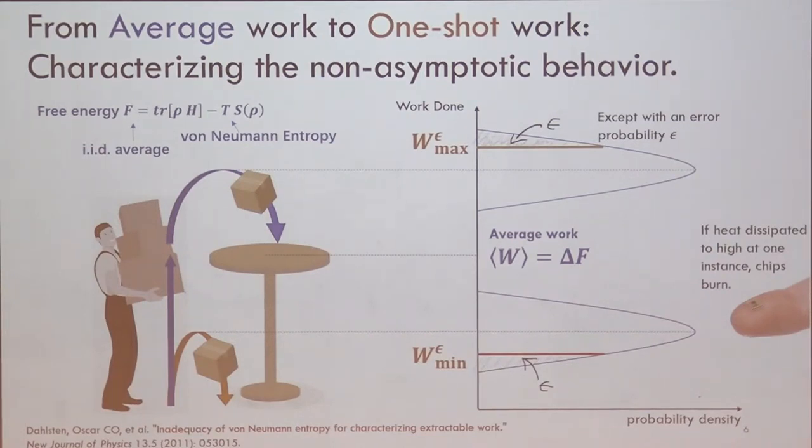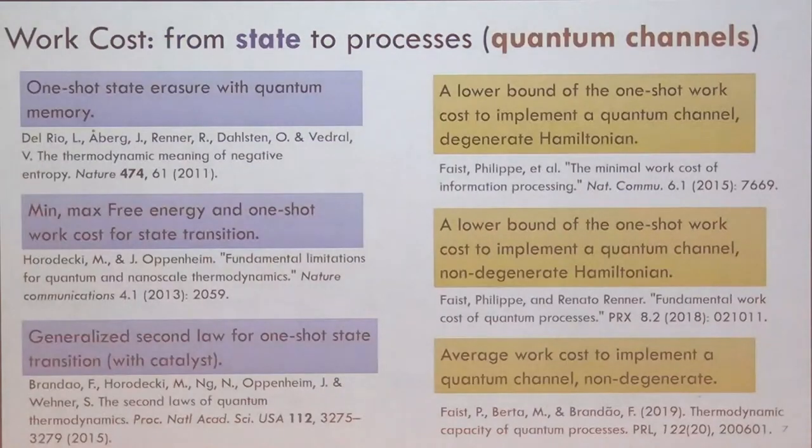Then we will use the notion of the min work and max work. For example, the min work epsilon means, except with probability epsilon, work cost is at least this much. So this, in fact, gives us a more accurate characterization for this fluctuating scenario. This is important because you do not want your chip to burn. So even if, on average, the heat dissipation is small, but it fluctuates a lot, then the chip will burn.